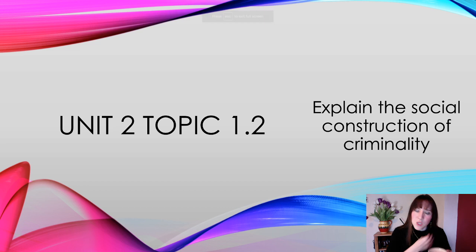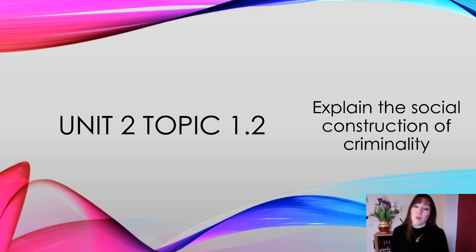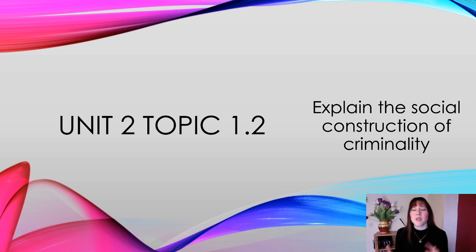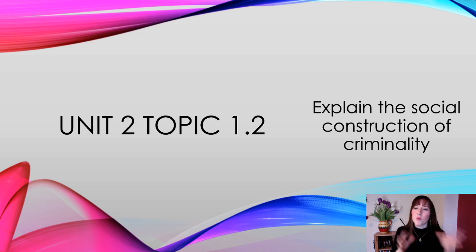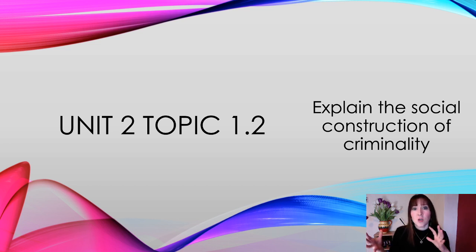This is Unit 2, Topic 1.2, leading on from last week's Topic 1.1 where we had a look at crime and deviance and how actions can be one or the other or both. We are now going to explain the social construction of criminality — how does society affect criminality, crime, criminals, etc.